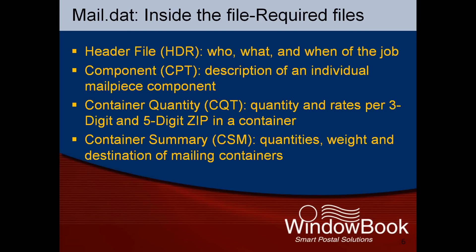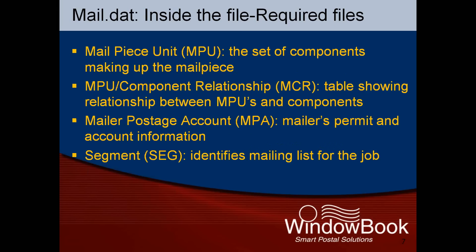The container quantity file is also required, and this details the quantity and rates of each three-digit and five-digit ZIP within a container, such as a tray or sack. The container summary file is also required, detailing the quantities, weight, and destinations of the mailing containers. Some additional required files include the mail piece unit, or MPU file, which is the set of components making up the mail pieces. The MPU component relationship file, or MCR, is a table which shows the relationship between the MPUs and the components — in other words, it shows which components are associated with each mail piece unit.